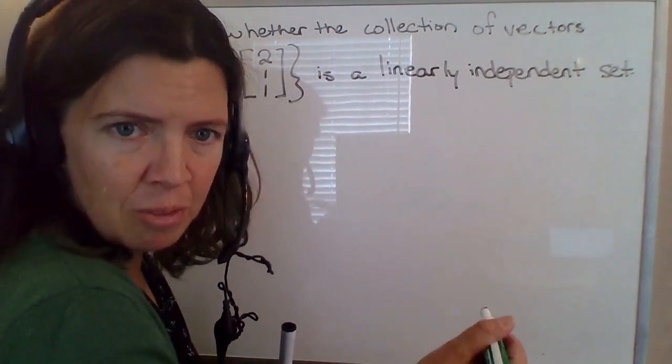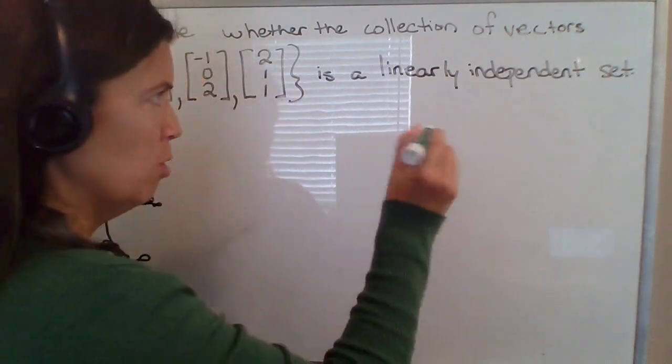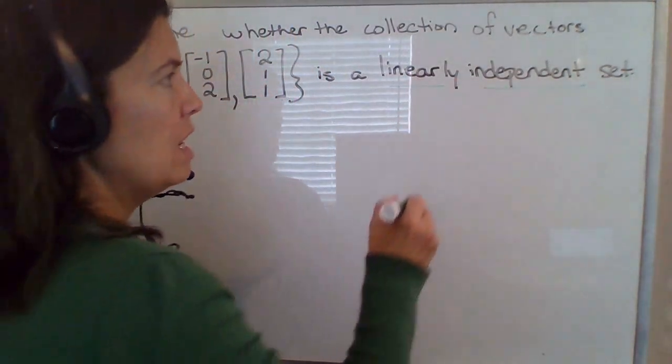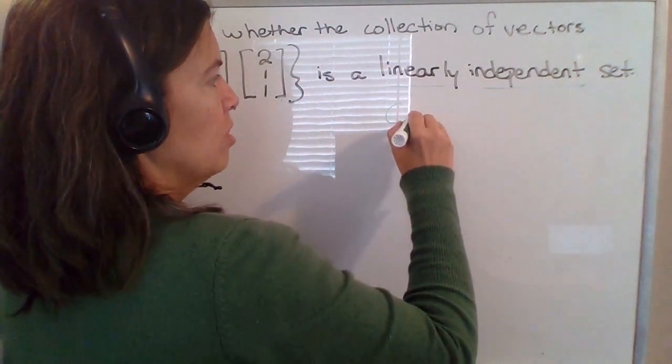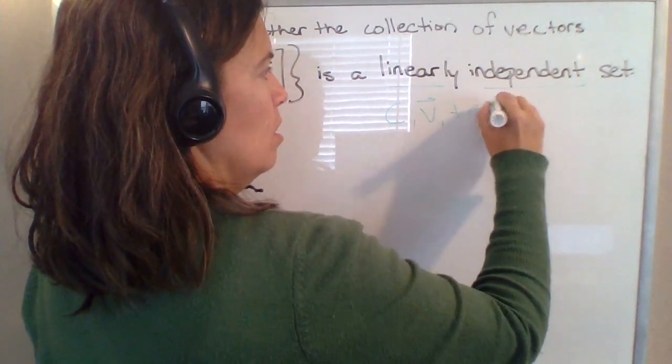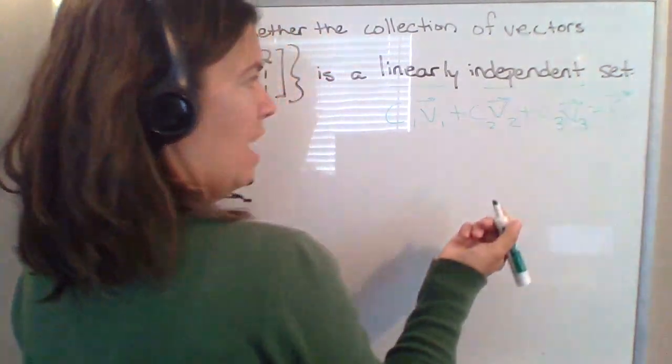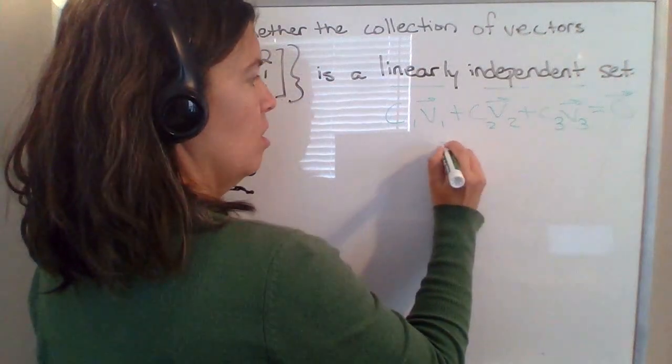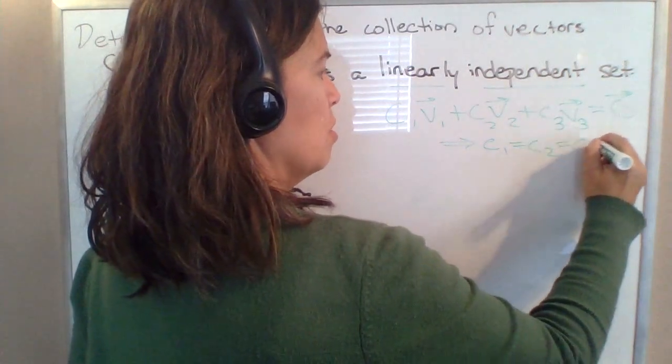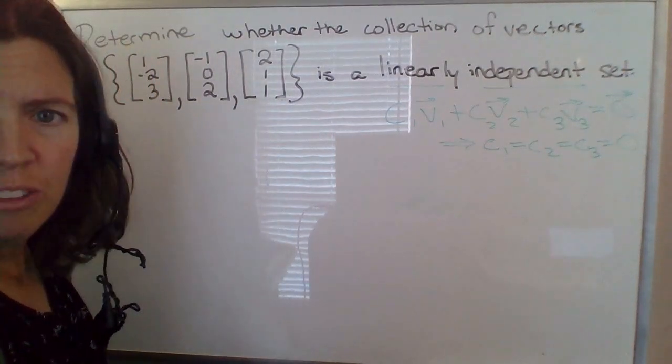So it helps to really work from the words in the problem. A collection of vectors is linearly independent if the homogeneous equation, so c1 times vector 1 plus c2 times vector 2 plus c3 times vector 3, we've got three vectors in this case, equal to the zero vector, if that has only the trivial solution. So if the only solution to this is c1, c2, c3 all must be zero. That's the trivial solution. And that should be the only solution if a set is linearly independent.